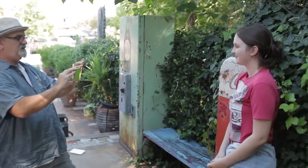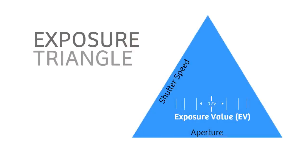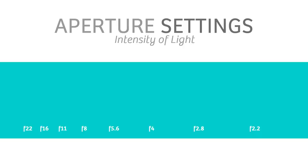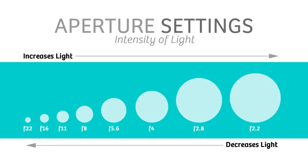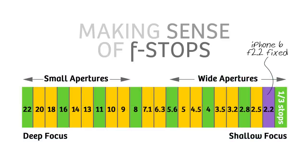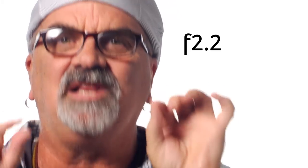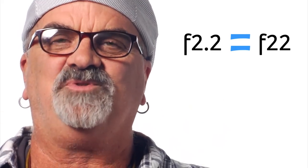There are three factors that affect every exposure you ever take: aperture, shutter speed, and ISO. Aperture is the hole, the opening, or the iris, and it refers to the intensity of light that hits the sensor. This is what the aperture, or the f-stop scale, looks like in one-third stops. Ironically, because of the small size of the iPhone sensor and lens, that f2.2 is like you are shooting in bright light at f22.